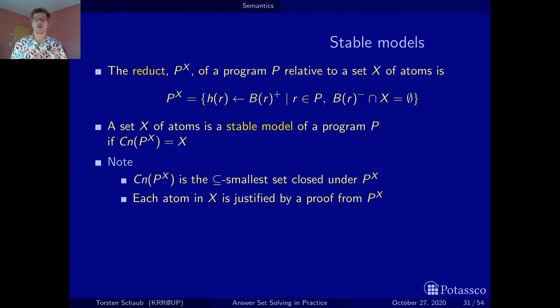Perhaps just to satisfy the logicians among you, of course, the stable model is also a set inclusion smallest model of the reduct. But keep in mind, only of the reduct, because the original program may not have a stable model, may have several minimal ones, and so this does not work. This only works with the reduct.